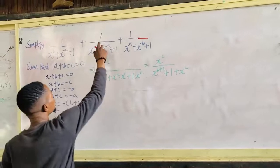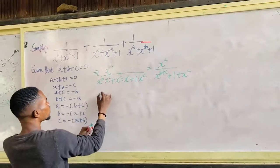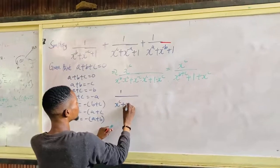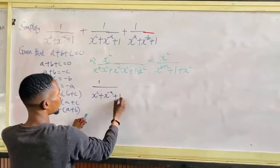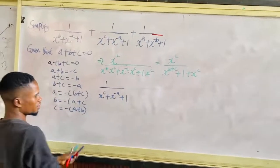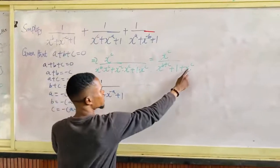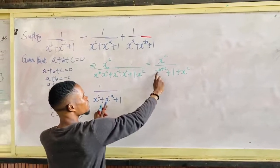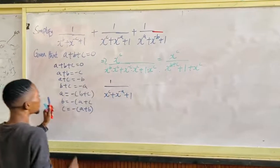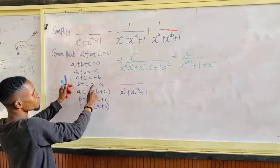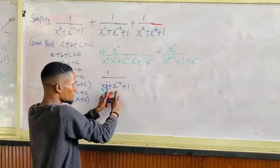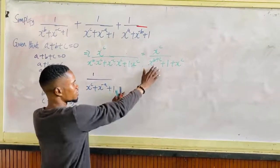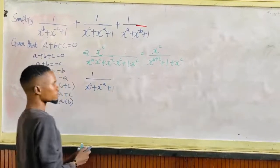Now look at the second fraction: 1 over x to the power c plus x to the power minus a plus 1. This gives x to the power c in the numerator, and x to the power b plus c in the denominator. Since b plus c is minus a, this is the same form. I just take the x to the power c. Let's hold on to this.